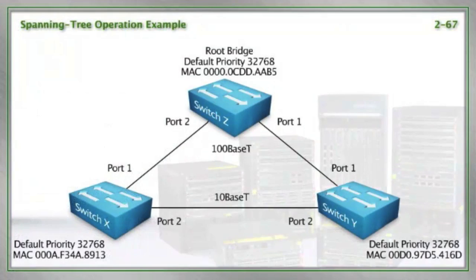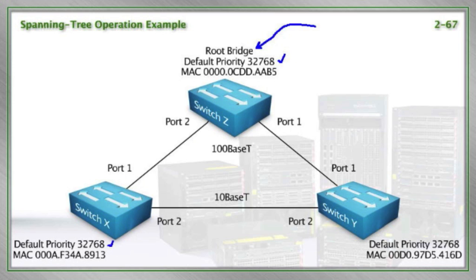Let's take a look at an example. In this example, we can see that Switch Z up here has been elected as the root bridge. Why did that happen? Well, all the priorities are at their default, 32768, so it certainly couldn't have been a priority manipulation. As Karen correctly specifies, it's random — it's the lowest MAC address. Switch Z had the lowest MAC address.